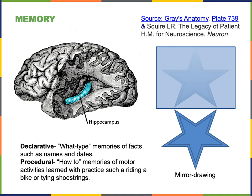The other type of memory is procedural memory — the "how-to" memories — which include things like skilled motor commands, such as learning to ride a bike or tie your shoes. You develop these memories through practice, but you do not develop a memory of the specific context. Instead, it is just the motor commands that get stored. Procedural memories are thought to involve processing networks in the cerebellum, basal nuclei, and regions of the frontal lobe.